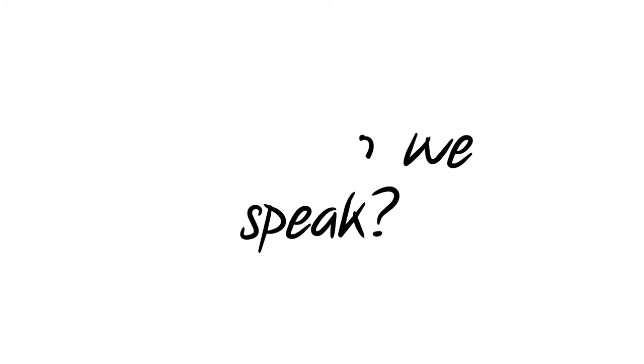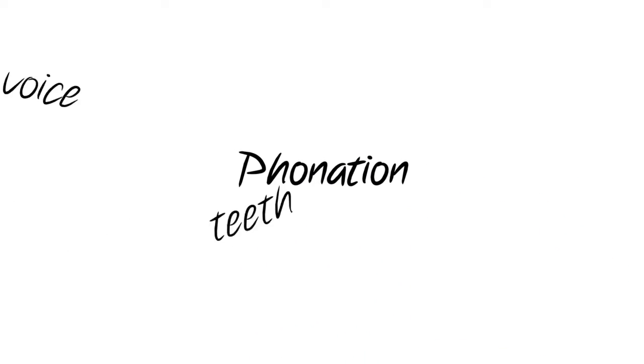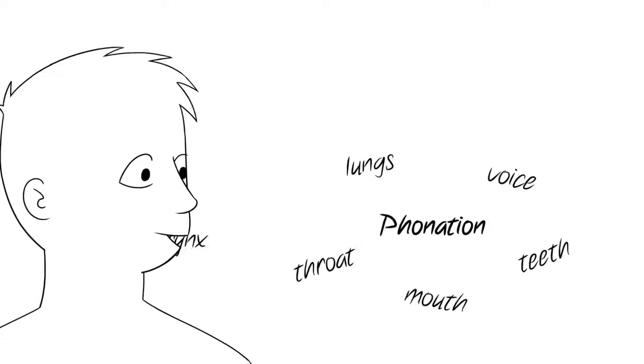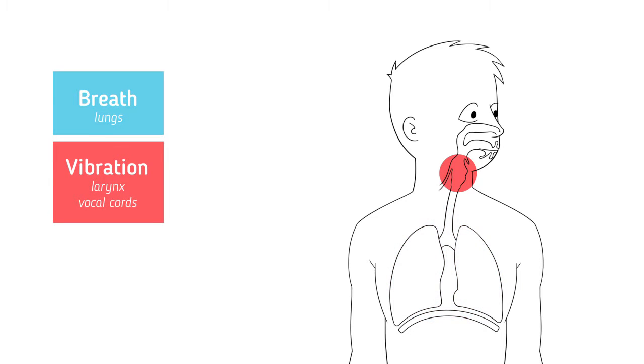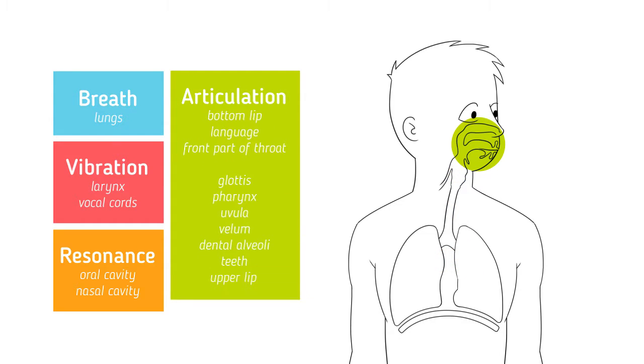How do we speak? Phonation is the ability to produce sound with the vocal organs. This is possible thanks to the air expelled from the lungs, vibration produced by the larynx and vocal cords, resonance from resonating organs, and articulation from articulator organs and places of articulation.